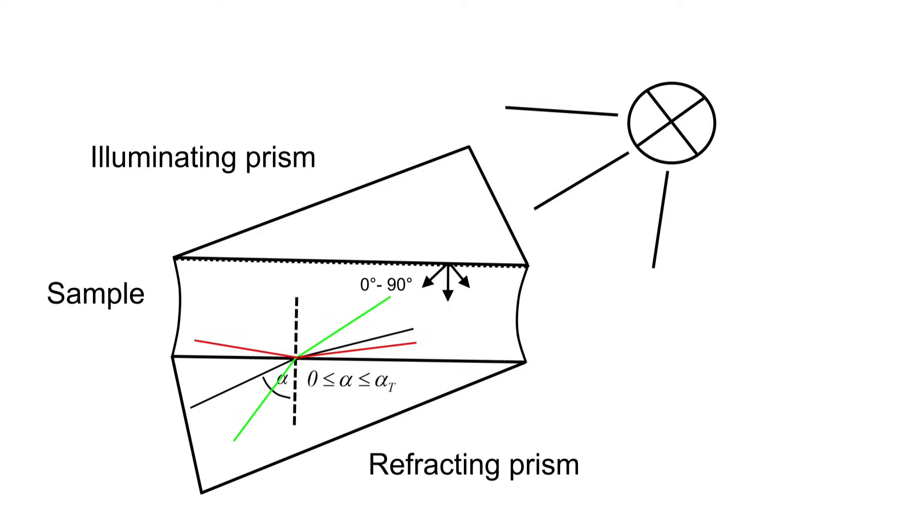When the angle is higher than alpha t, total internal reflection takes place and the light doesn't enter the prism anymore. So there's a dark and an illuminated area where the border shows the exact value of alpha t.